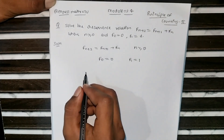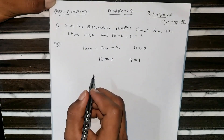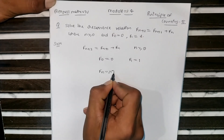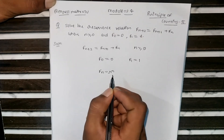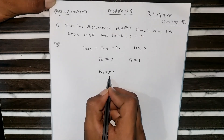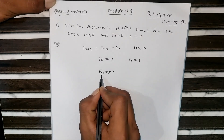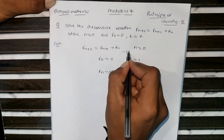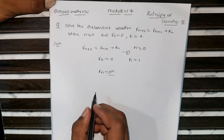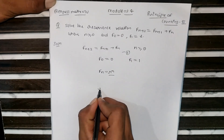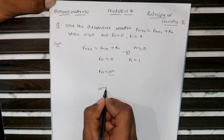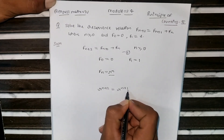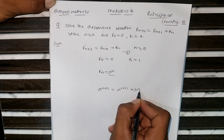Assume the solution in the form of f(n) = r^n. Substitute the value of f(n) = r^n into the equation. The equation becomes r^(n+2) = r^(n+1) + r^n.